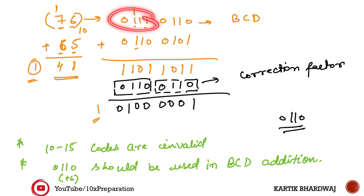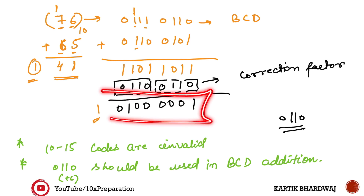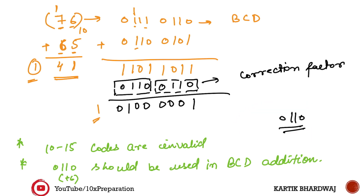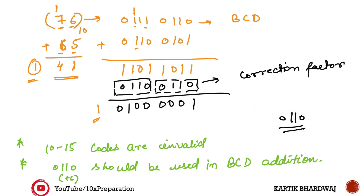For example, consider 76 plus 65. Adding the lower digits: 6 plus 5 equals 11, which is beyond the BCD range. So you add the correction factor 0110 (which is 6) to bring it back into BCD range. Similarly, 7 plus 6 gives 1101, which is also invalid, so you again add 0110. We use 6 as the correction factor because there are 6 unused states, and BCD representation requires 4 bits, so the correction factor is 0110.